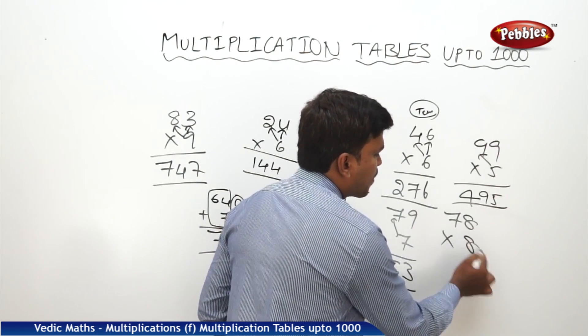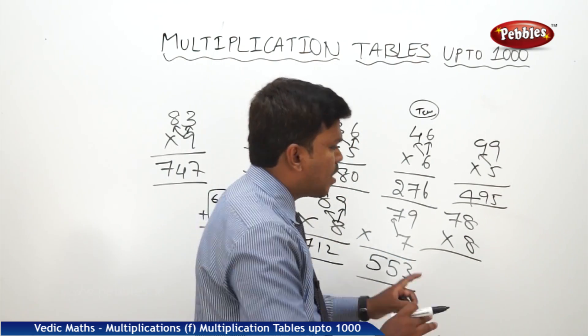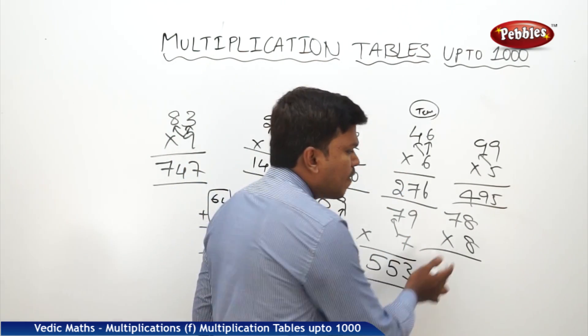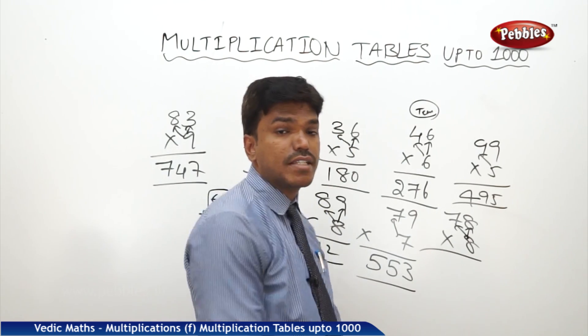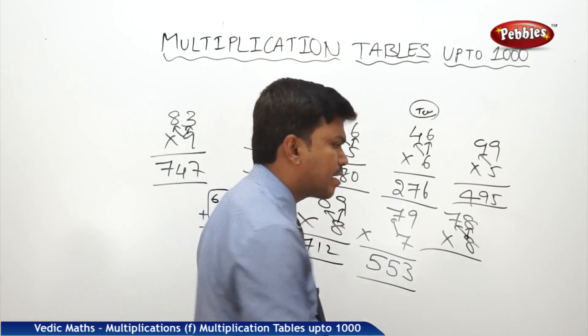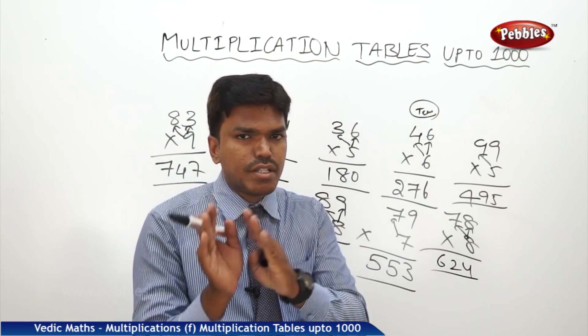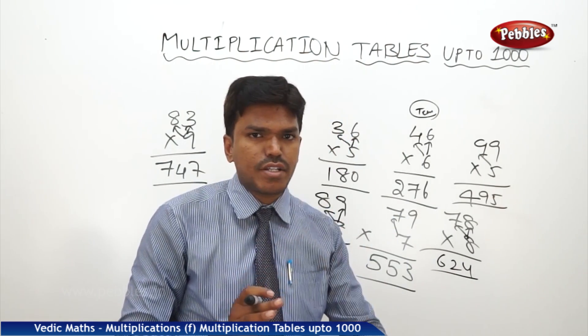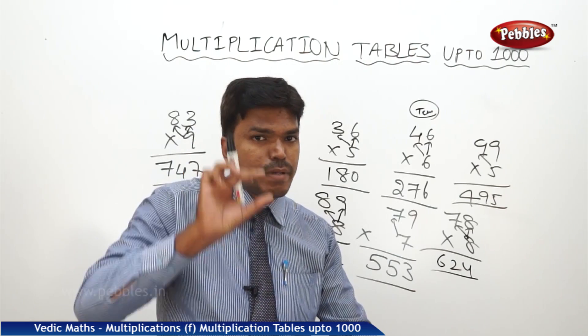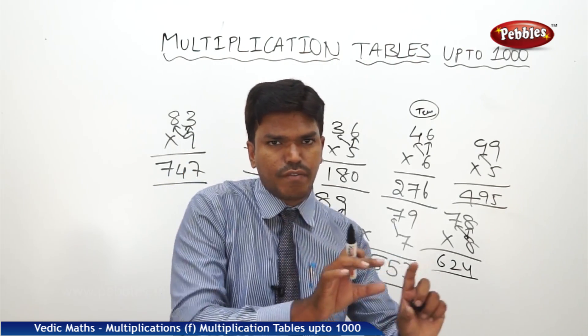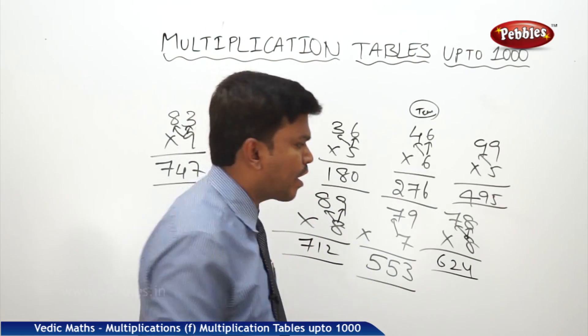Similarly 78 eight times. Don't say this time 8 seven 56, simply 560 plus 64. 560 plus 64 is how much? Exactly 624. 560 plus 64, 0 plus 4 will get 4 as it is. Now 56 plus 6 is 62.